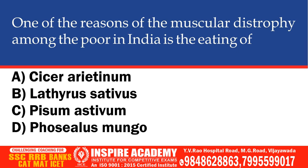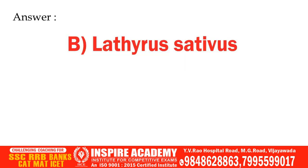One of the reasons of muscular dystrophy among the poor in India is the eating of which plant? Options: Cicer arietinum, Lathyrus sativus, Pisum sativum, Phaseolus mungo. The correct option is Lathyrus sativus.